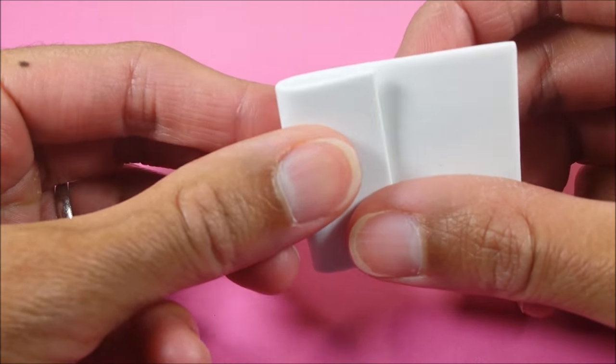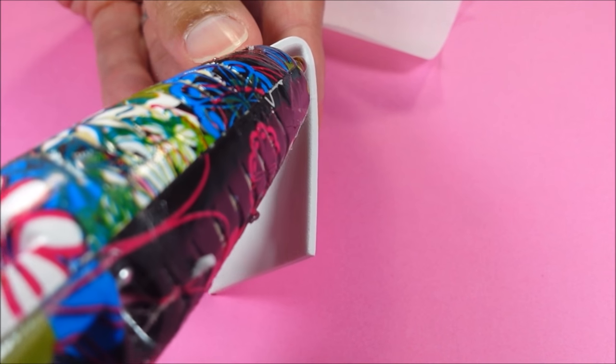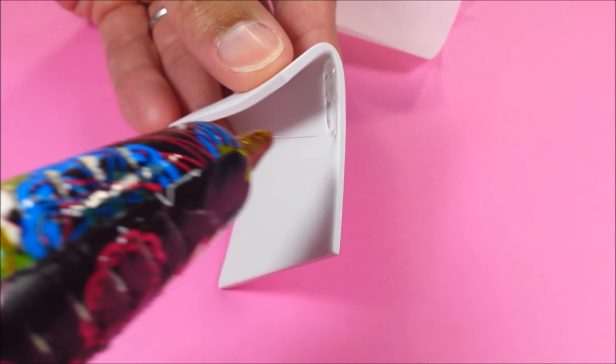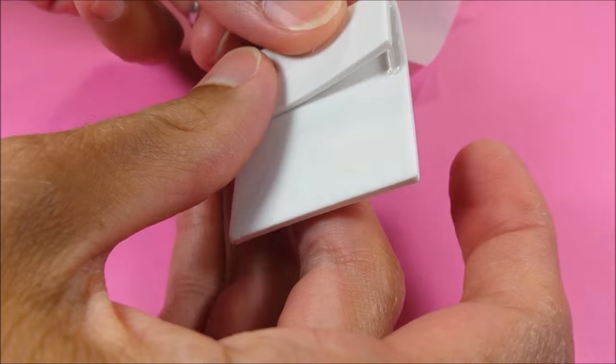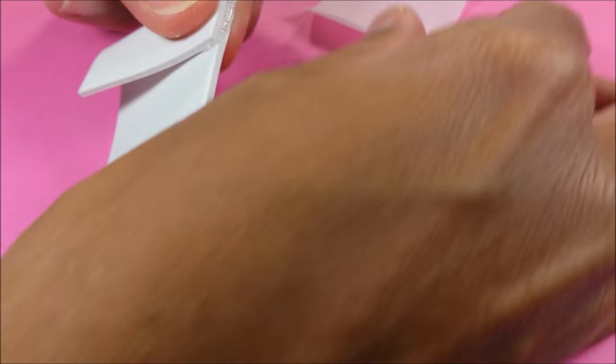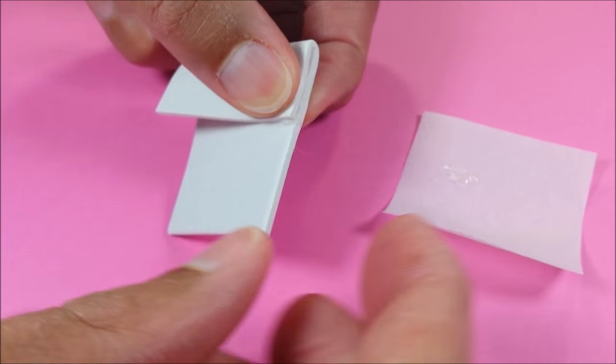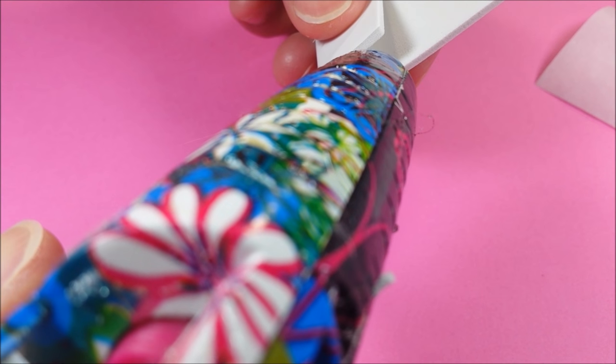I have parchment paper handy for this hot glue that I'm about to use. I'm just folding over my little pencil case here, squirting in some hot glue just along the sides, and I can use my parchment paper to kind of smash that down. I do the same thing on the other side.